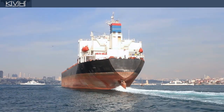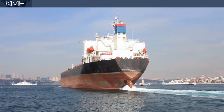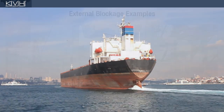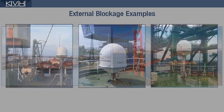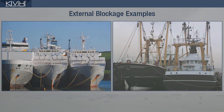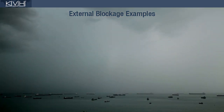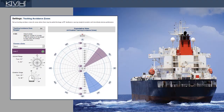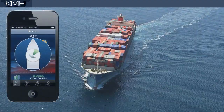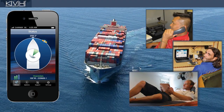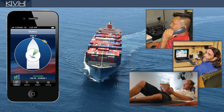Before we close, please be aware that things outside the vessel can also interfere with satellite signals — for example, cranes at the dock, bridges, other vessels, and even severe weather. Although Tracking Avoidant Zones can't possibly account for all cases of blockage, they can still make a huge difference in performance by avoiding the permanent blockage conditions on board that are most disruptive.